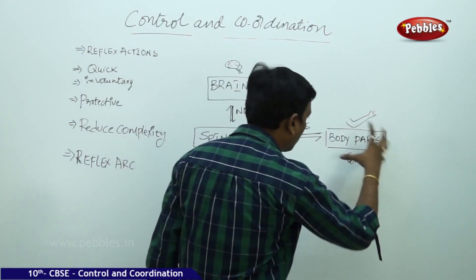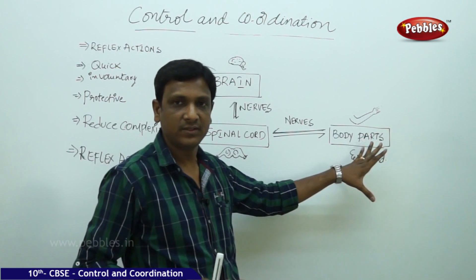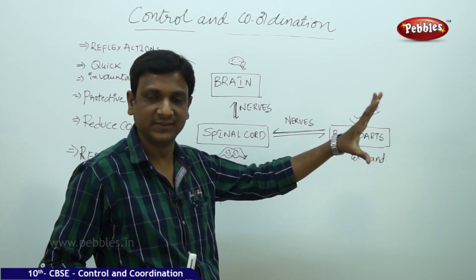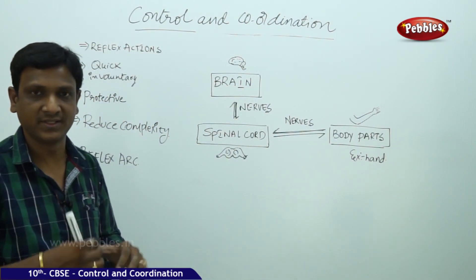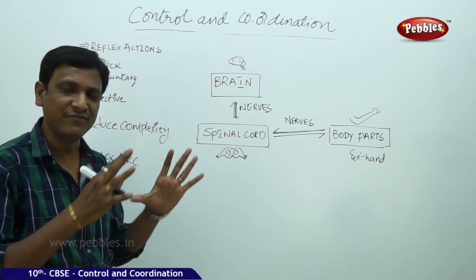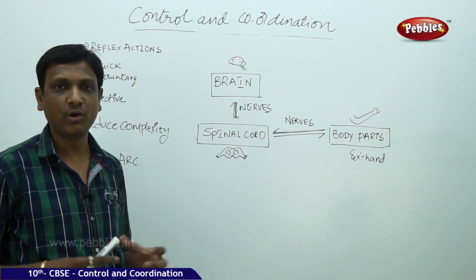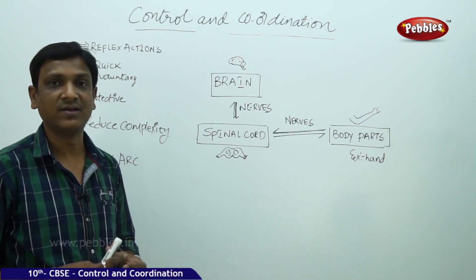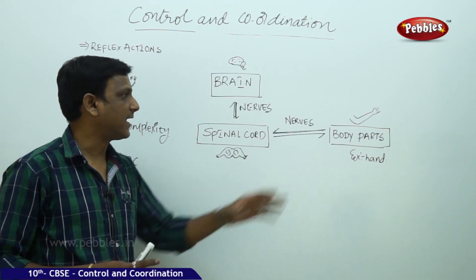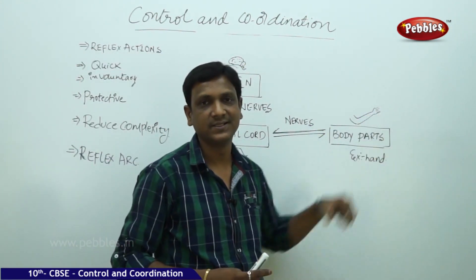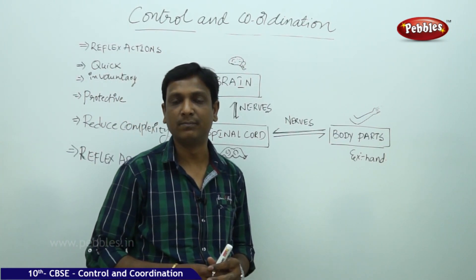We have different body parts like hands and legs. Whenever there is some stimulus, the information is taken to the nervous system, analyzed, processed, and decisions are taken. But this seems to be a very complex, long, and lengthy process. Sometimes you will not have enough time to produce a response — you need very quick responses. Suppose you kept your hand on a hot object, or touched a hot object, or barefooted put your leg on a bike silencer.